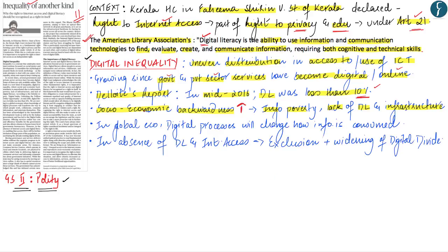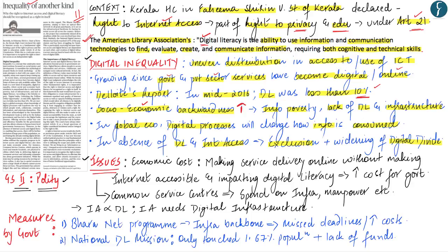Considering that we are all moving towards a global economy where digital processes will transform the way people consume information, collaborate, work, or entertain themselves, providing services online does have advantages for the government. However, given the absence of digital literacy and internet access for most people in India, this absence will actually lead to exclusion of a huge chunk of the population and will further widen the already existing digital divide. The major issue involved is the economic cost.